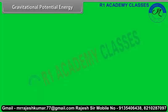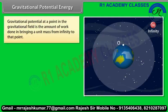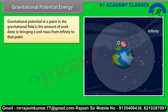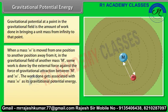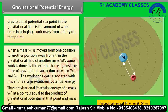Gravitational potential energy. Gravitational potential at a point in the gravitational field is the amount of work done in bringing a unit mass from infinity to that point. When a mass M is moved from one position to another in the gravitational field of another mass, some work is done by the external force against gravitational attraction. This work gets associated with mass M as its gravitational potential energy, which equals the product of gravitational potential at that point and mass M.